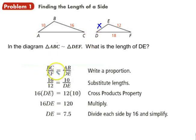So BC over EF equals AB over DE. The blue sides go together, and the red sides go together.